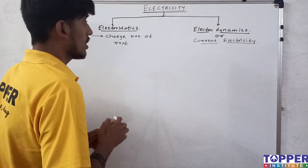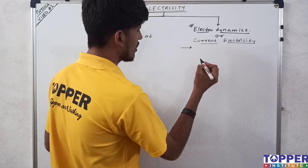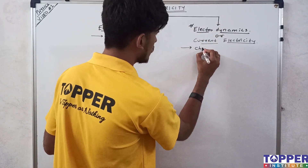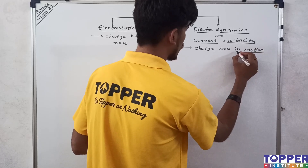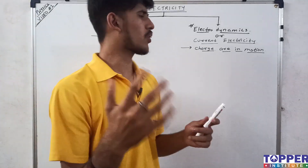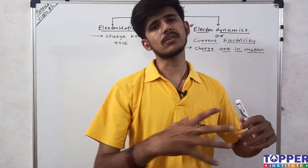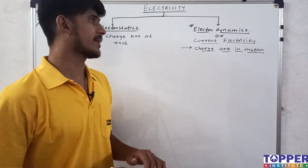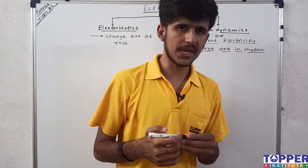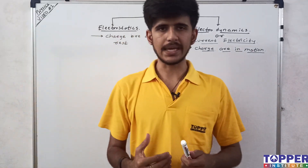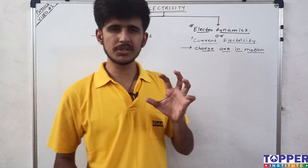The second branch is Electrodynamics. Here we assume that charges are in motion. When we study electricity assuming charges are moving, we call it Electrodynamics or Current Electricity. It got the name 'Current Electricity' because when charges move, current flows. In our class 10 syllabus, we have to study Current Electricity, and in today's video we will discuss the key terms of this branch.